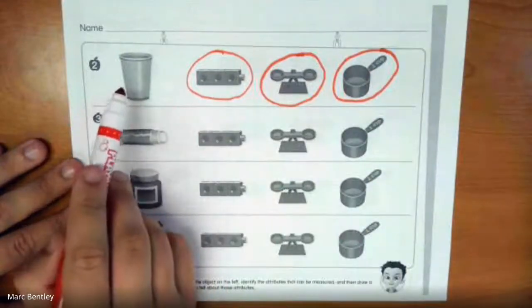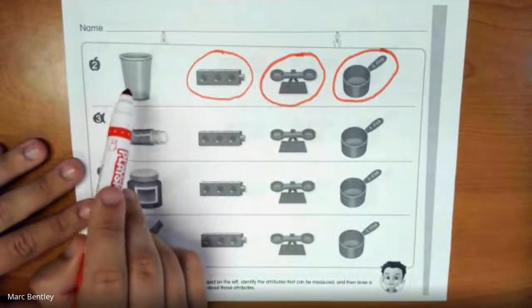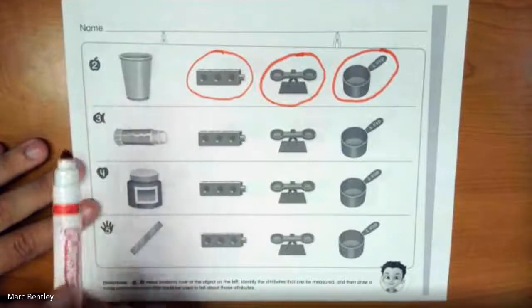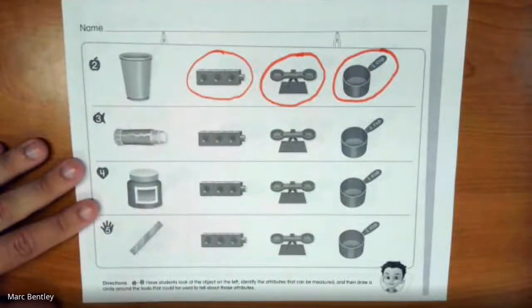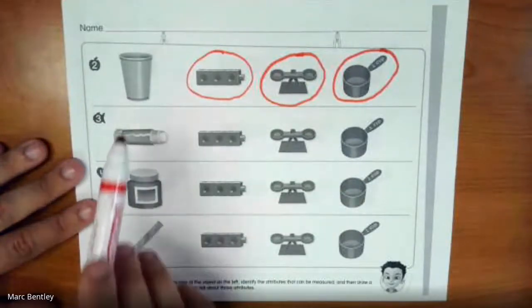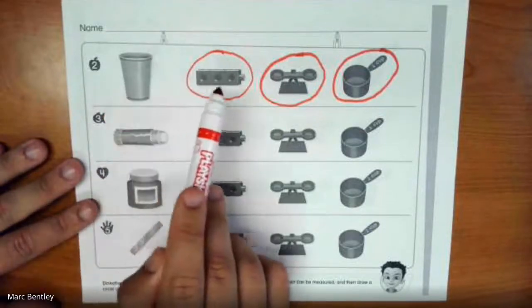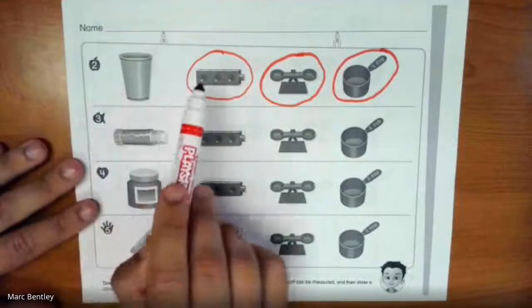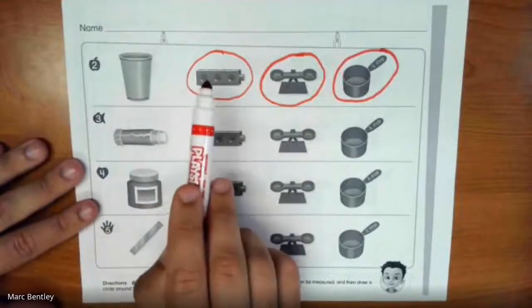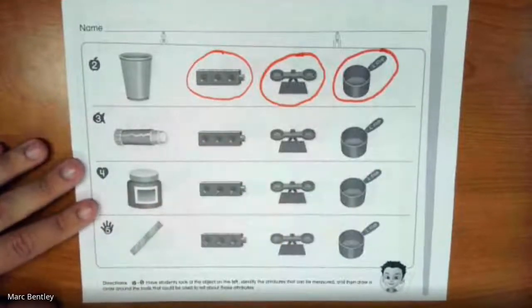Because it's hollow, there's nothing inside it, so we could fill this up and see how much it holds. Could be water or some other kind of liquid, but because it's hollow we could definitely measure its capacity. So I circled length, weight, and capacity for this one.